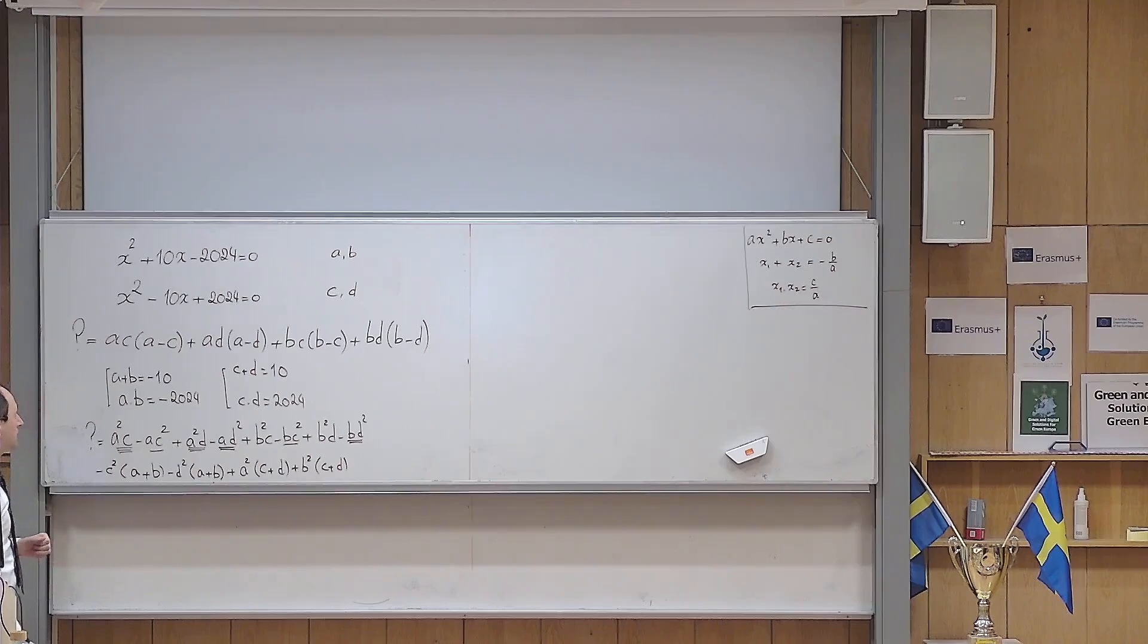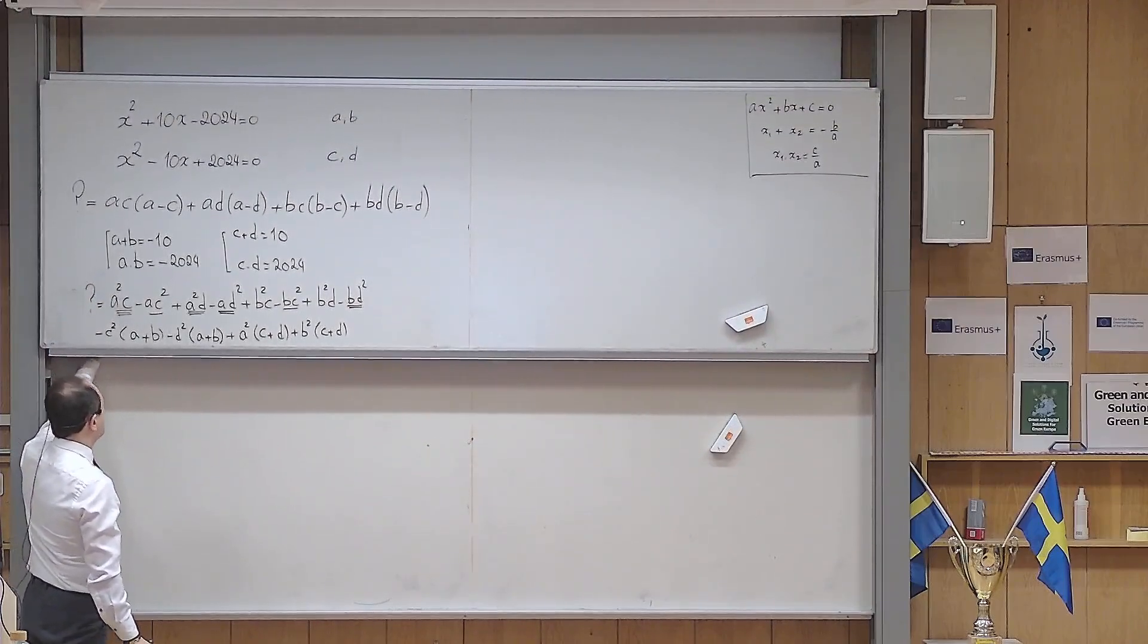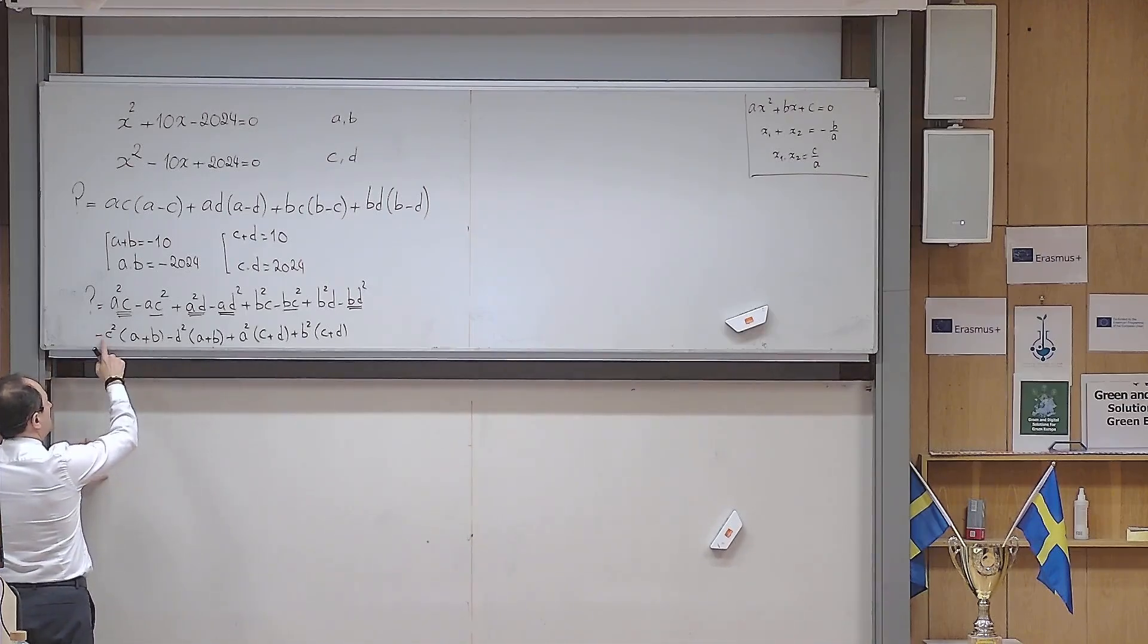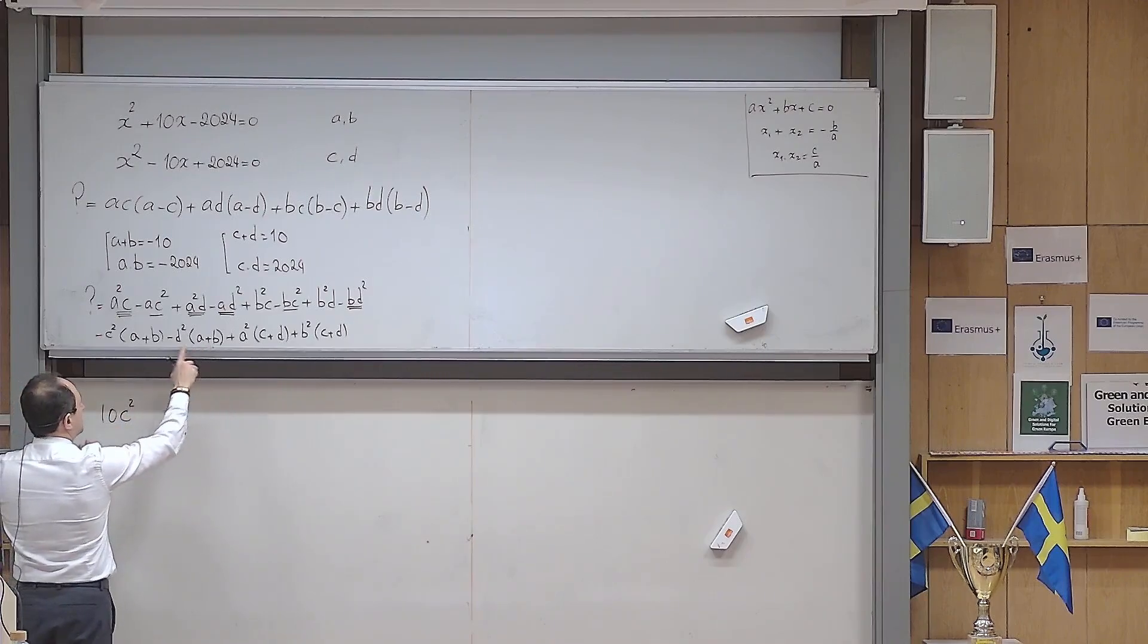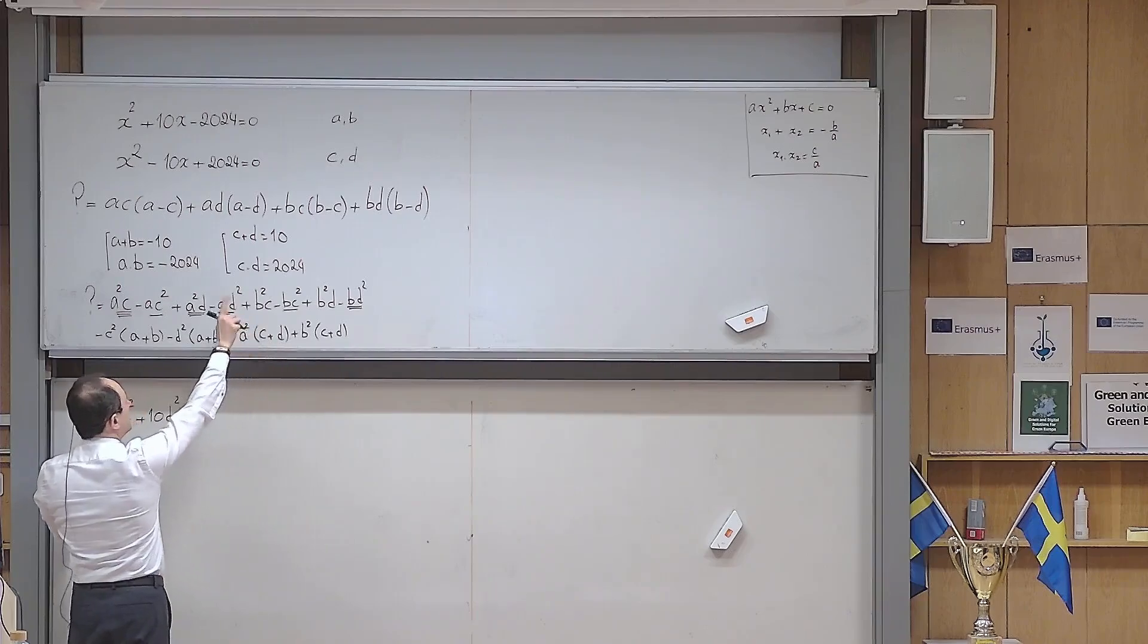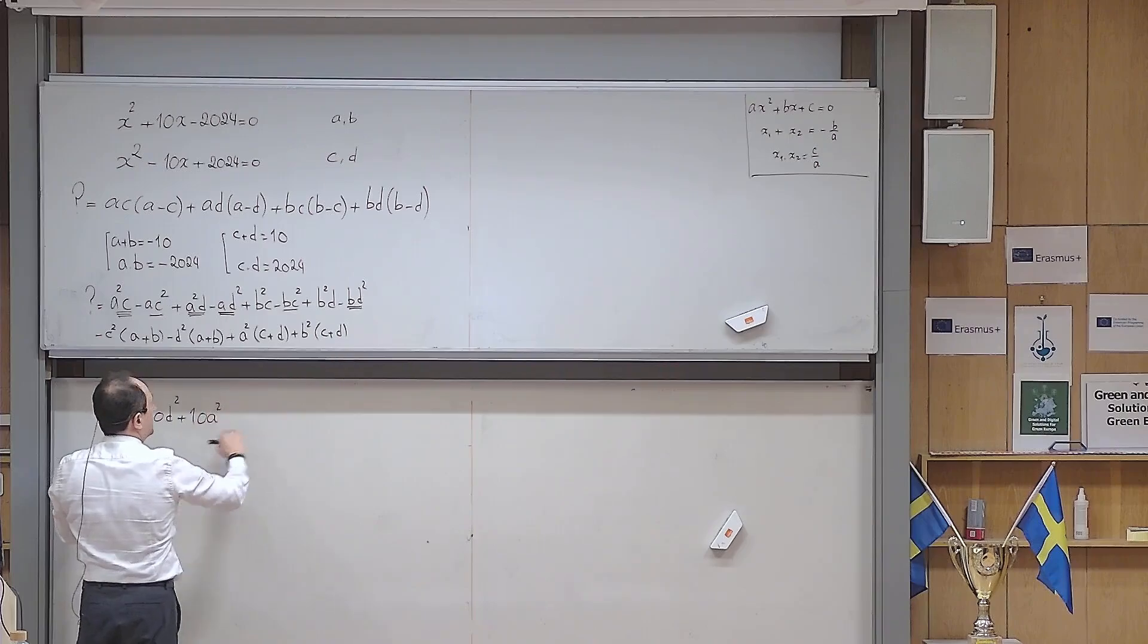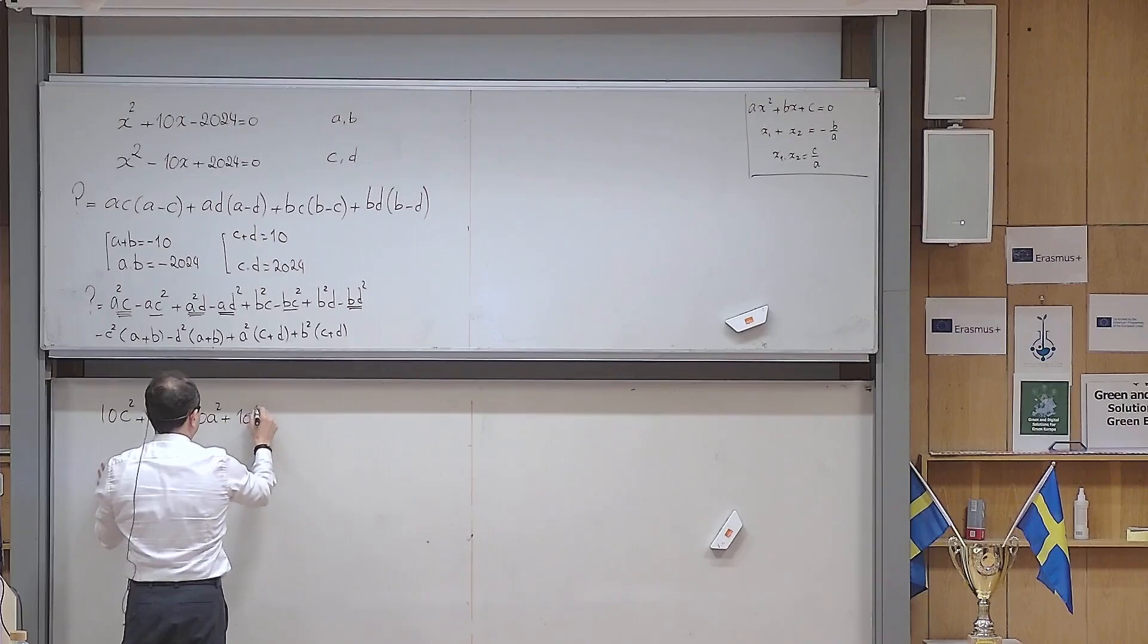But a plus b is minus 10, so let me put these numbers in. This expression becomes minus 10 times minus c squared, so it becomes 10c squared. This is minus 10, so it becomes 10d squared. And then, c plus d is 10, so it becomes 10a squared. And c plus d is again 10, so it becomes 10b squared.